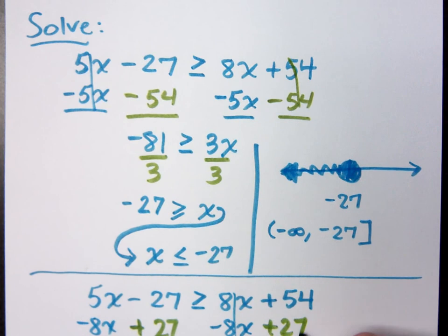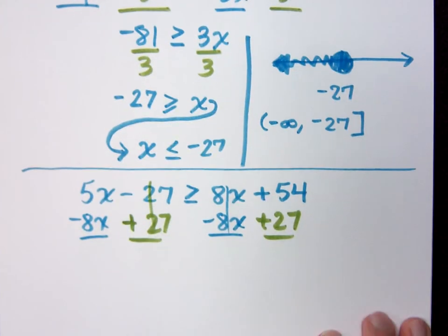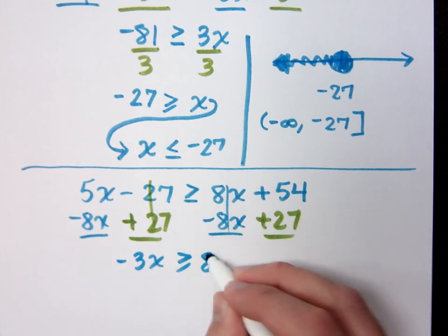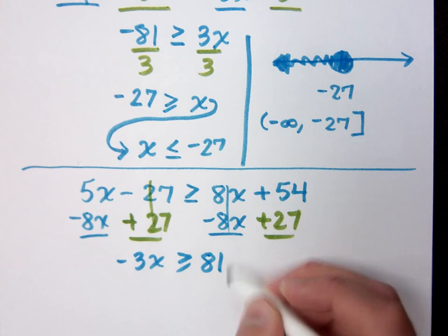If I move my x's to the left by subtracting 8x, and then I have to move my constants to the right, you end up with negative 3x is greater than or equal to 81.